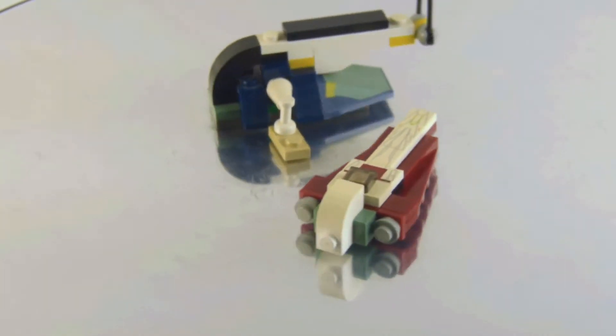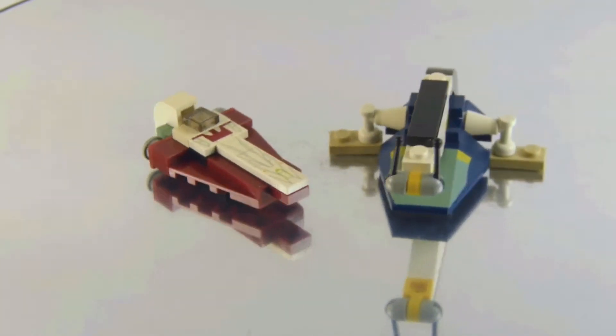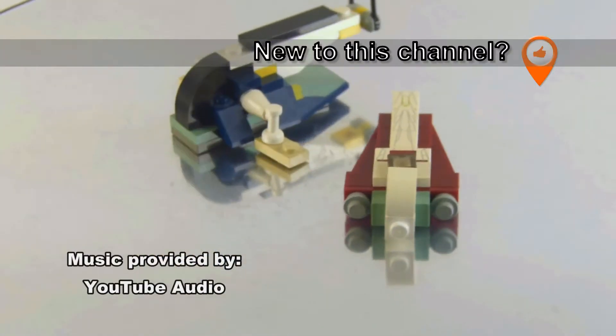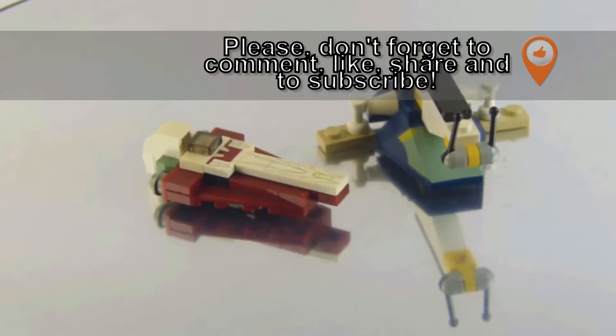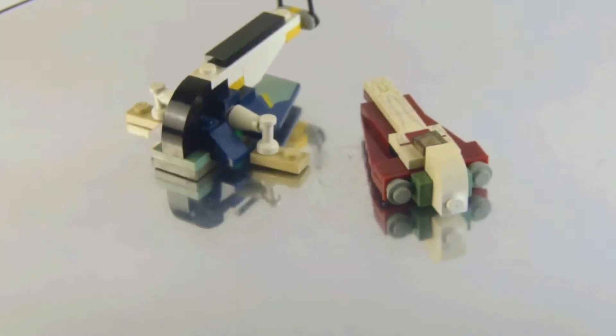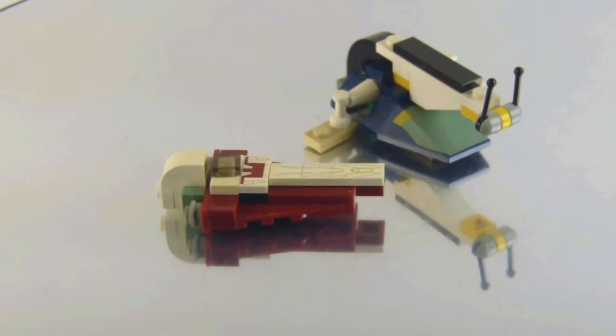In this video, I'm reviewing a vintage Lego Star Wars set from 2003. This is Mini Jedi Starfighter and Slave 1, set number 4487, and it has 53 pieces. It came out in 2003 and it's from the mini building set line.